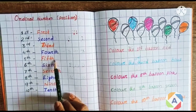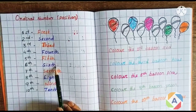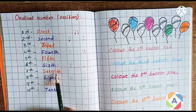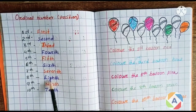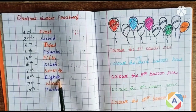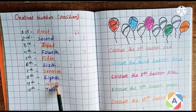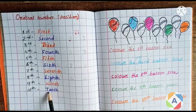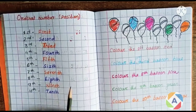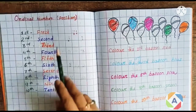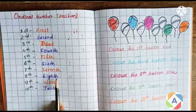Sixth — S-I-X-T-H, seventh — S-E-V-E-N-T-H, eighth — E-I-G-H-T-H, ninth — N-I-N-T-H, tenth — T-E-N-T-H. Friends, in ordinal numbers, when we write the words: first, second, third, fourth, fifth, sixth, seventh, eighth, ninth, tenth.